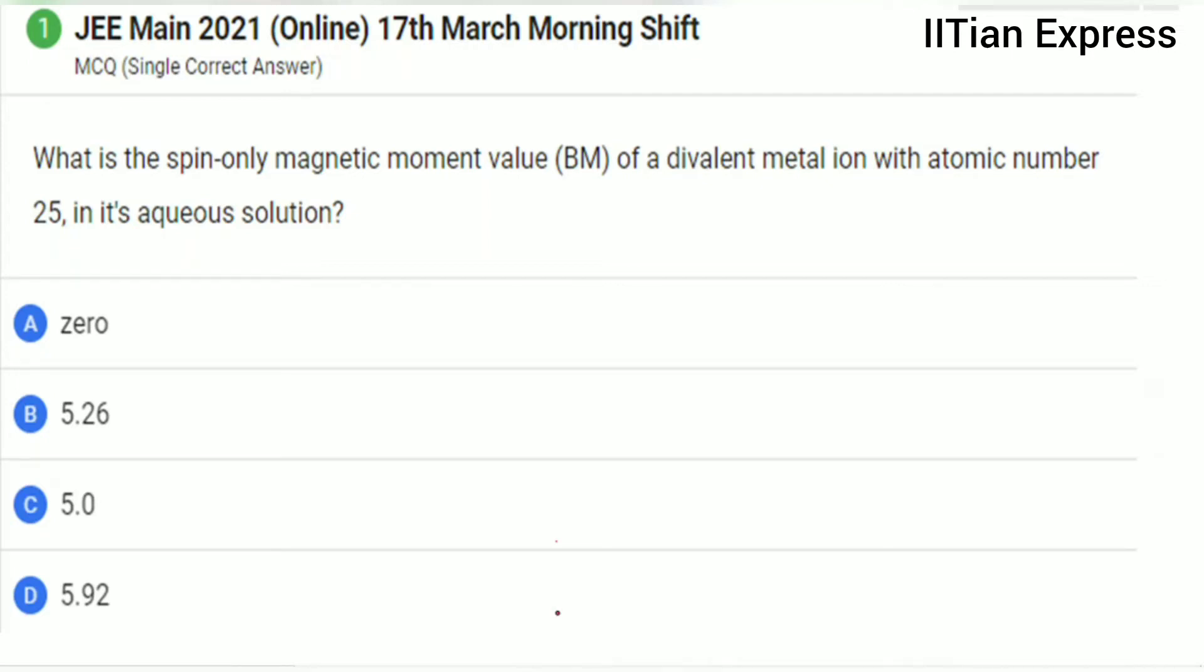Hello everyone, how are you all? Today we're having a question from JEE Main 2021 paper, and this is a single correct answer type question. The question is: What is the spin-only magnetic moment value of a divalent metal ion with atomic number 25 in its aqueous solution?